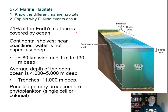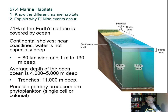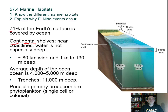Section 4 covers marine habitats: know the different marine habitats and explain why El Niño events occur. Oceans cover 71% of Earth's surface. Continental shelves are near coastlines — not extremely deep, approximately 80 kilometers wide and ranging from 1 to 130 meters deep. By comparison, one lap around a standard track is 400 meters, so continental shelf depths are shallow by ocean standards.